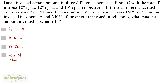David invested a certain amount in three different schemes A, B, and C with rates of interest 10%, 12%, and 15% per annum respectively. If the total interest accrued in one year was Rs. 3,200, and the amount invested in scheme C was 150% of the amount invested in scheme A and 240% of the amount invested in scheme B, what was the amount invested in scheme B?